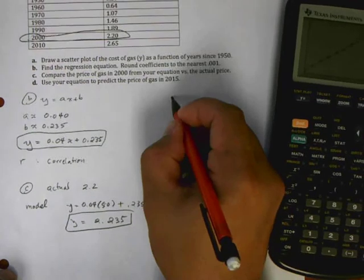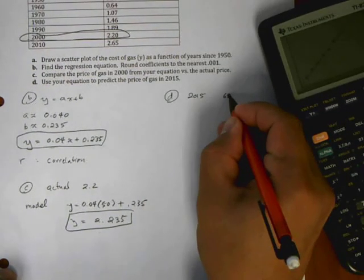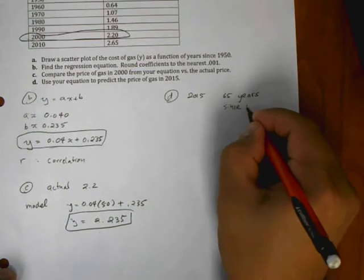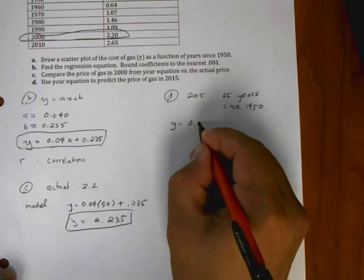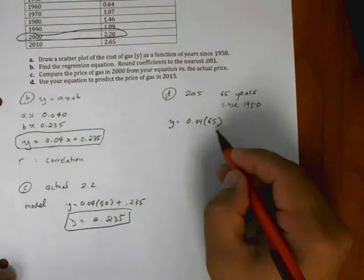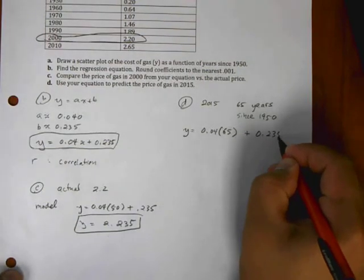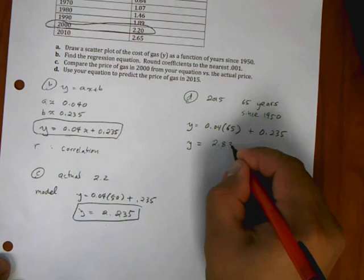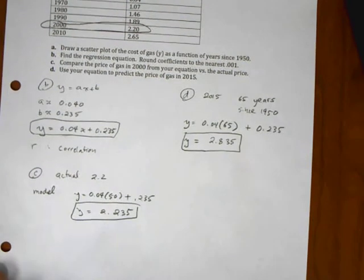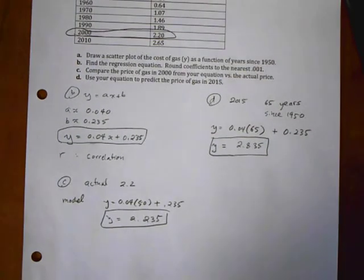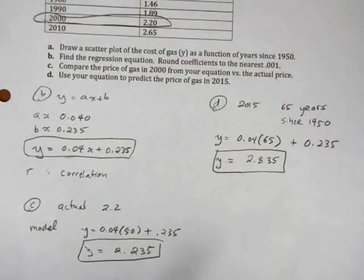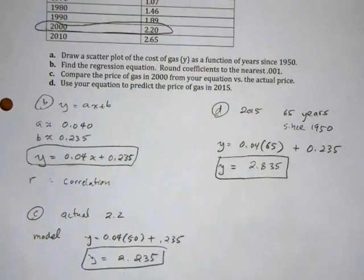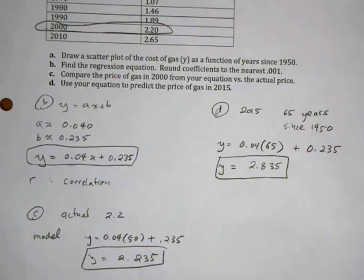The last part asks: use your equation to predict the price of gas in 2015. The year 2015 is 65 years since 1950, so: y = 0.04(65) + 0.235 = $2.835, or about $2.84. Gas prices have already exceeded this due to other economic factors, showing the model isn't perfect — but it's a good prediction based on the existing data. That's function regression: take existing data, make an equation, and use it to predict future values.